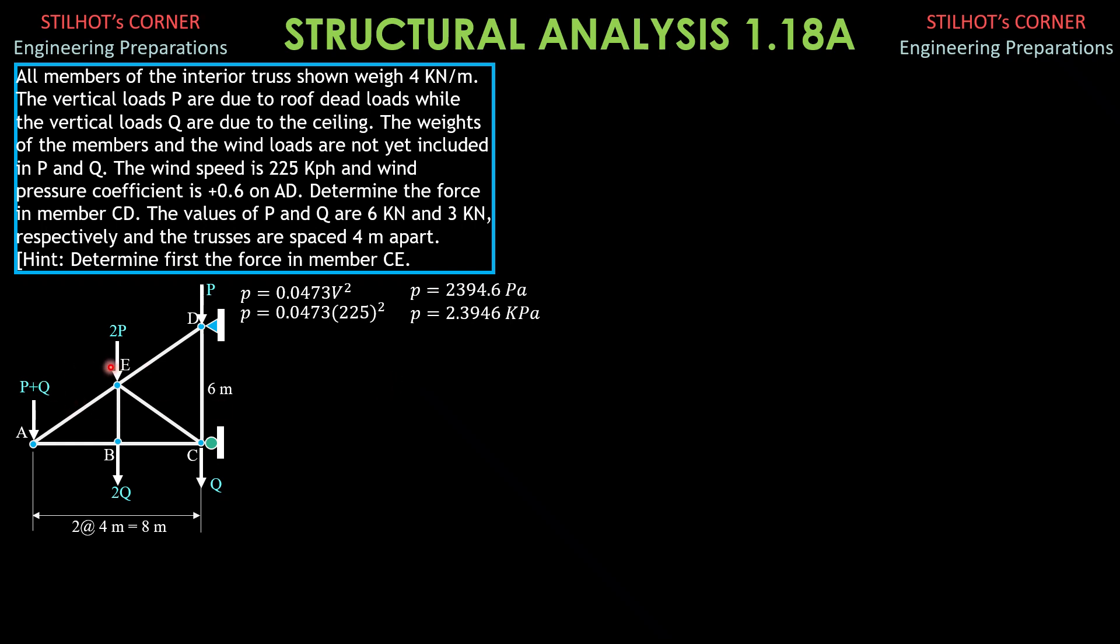Therefore, the uniform load here normal to the surface ET is equal to wind pressure coefficient, which is 0.6 times the pressure, 2.3946 kilopascals, times, supposedly, this length, but times 4 meters, the distance between trusses, supposedly.